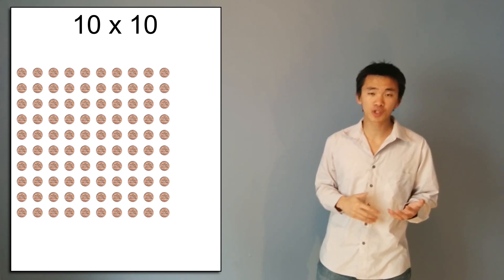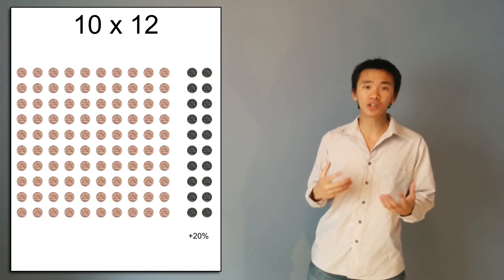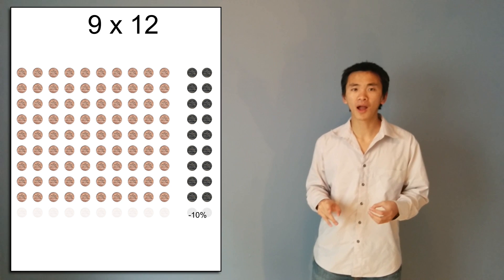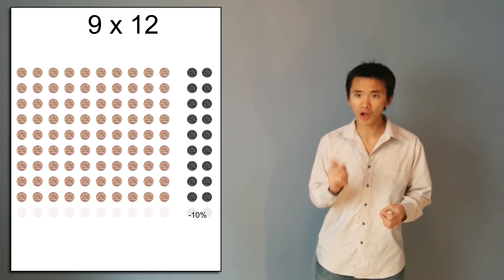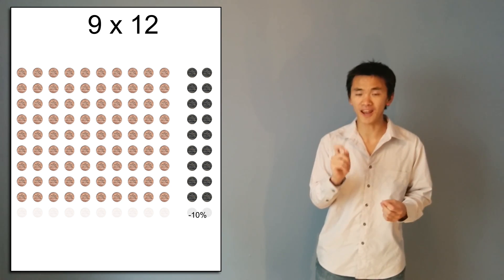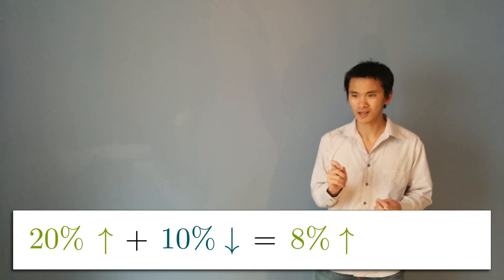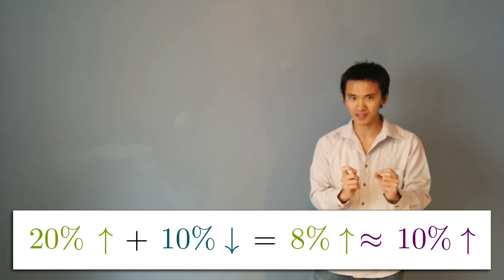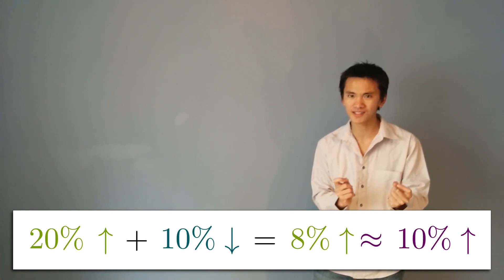Now let's look at what happens if I have a 20% increase followed by a 10% decrease. It means I'm going to add 2 columns and subtract 1 row, and I'm left with 108 coins. That's nearly the 10% increase I could expect, but not quite.